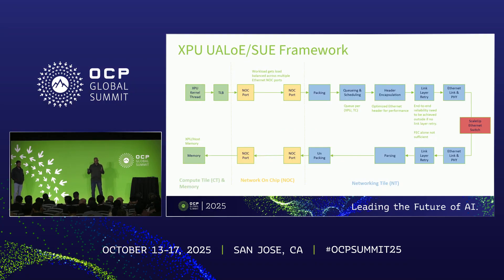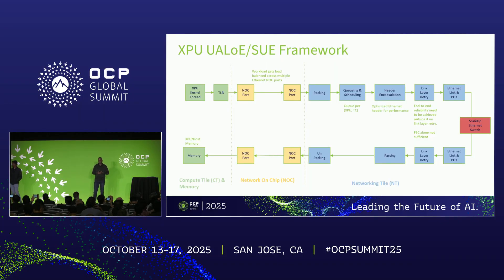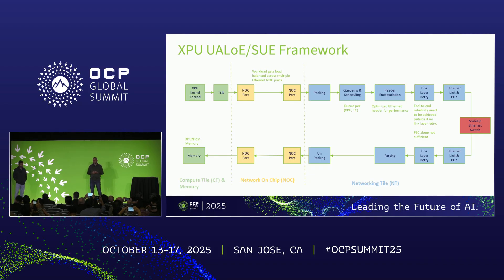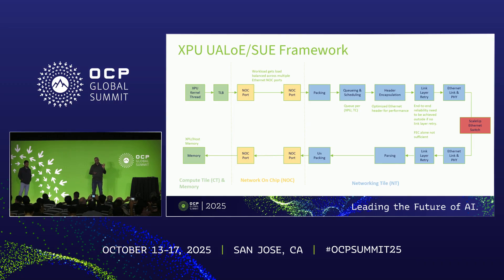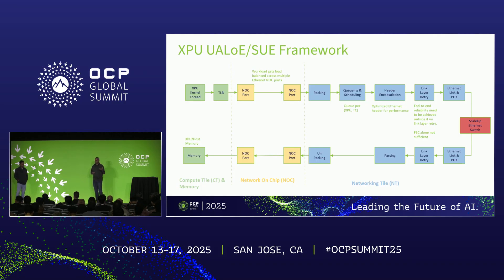This is a typical simple framework. On the left-hand side we have a compute tile; on the right-hand side we have a networking tile. Within the networking tile, the TX and RX are connected to the switch, and the switch can be any off-the-shelf Ethernet switch. As the XPU is done and wants to transfer the payload, it basically needs to load balance across all the networking tiles. The load balancing can happen very efficiently because it can load balance at 256 bytes.